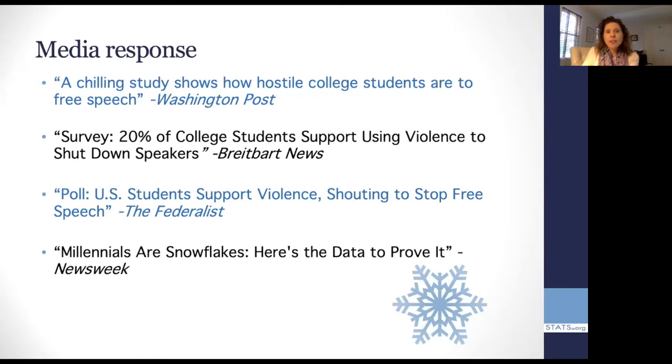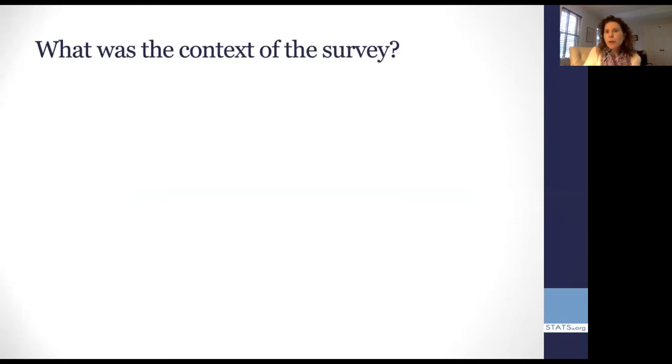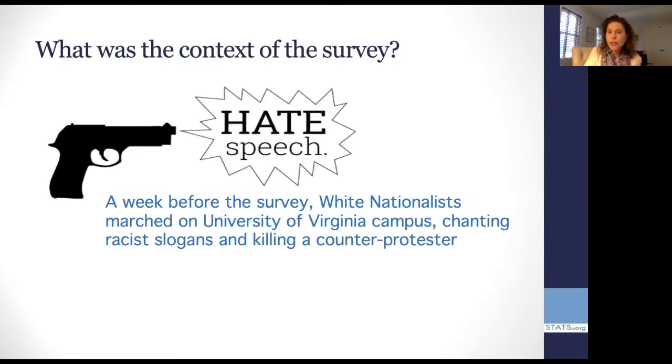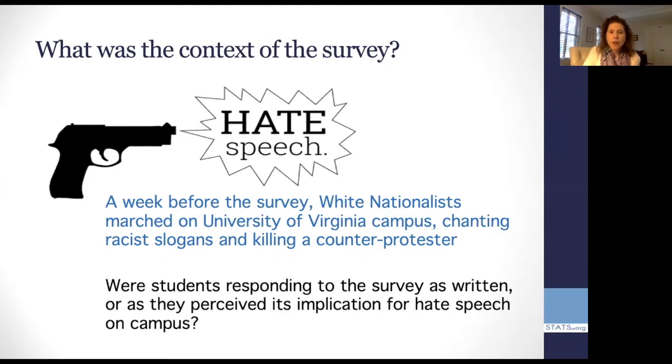So what we have here is a really important question as to how people are thinking with a survey that comes out saying that people are supporting violence to shout down speakers. And it certainly feeds into a certain point of view of how students are responding to questions of free speech when they feel that their ideas are threatened on campus. But there's an important context to the study that I want to bring up, which is that about a week before that study, there was a group of white nationalists who marched to the University of Virginia, insisting that they were there to preserve some Confederate statues. And instead, they were chanting racist slogans and eventually drove a truck into a group of counter protesters and killed one. And that had happened just a week before, which makes you wonder whether the students were actually responding to the survey as it was written or as they perceived its implication for hate speech on campus.